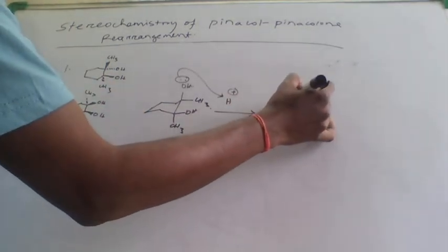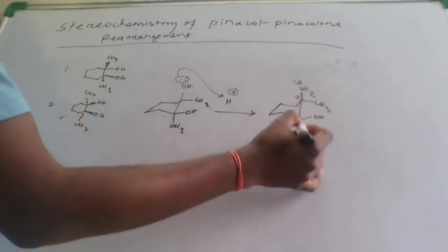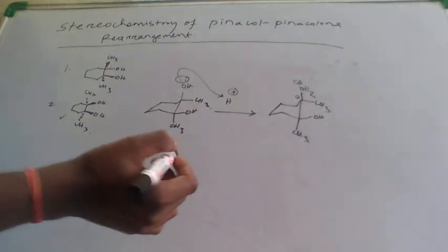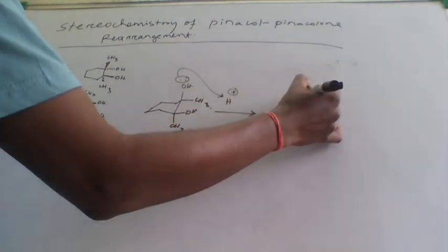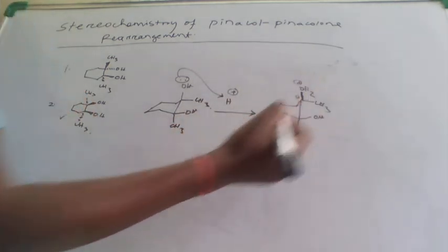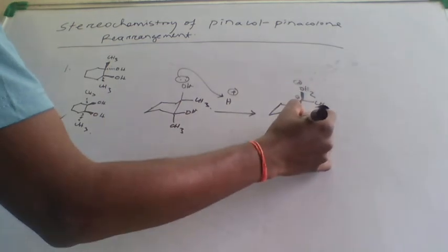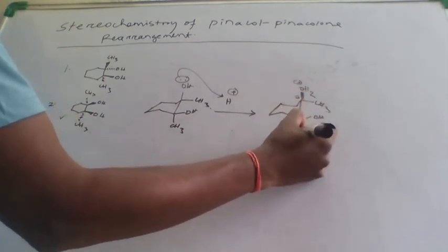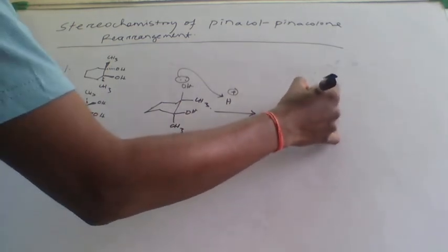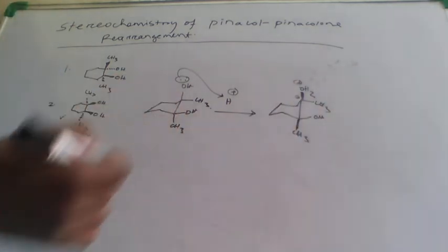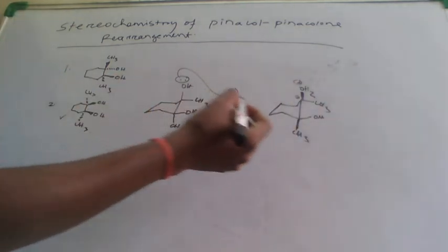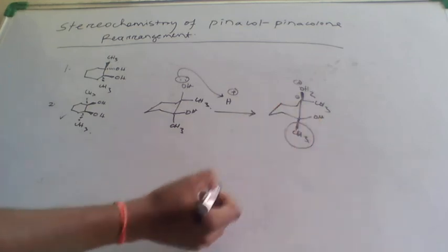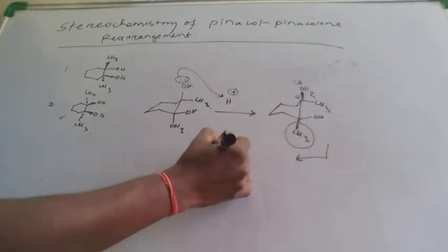Now see which bond is anti-periplanar to the leaving group. This bond is exactly anti-periplanar to the OH2 positive leaving group, so rearrangement of this methyl group takes place.